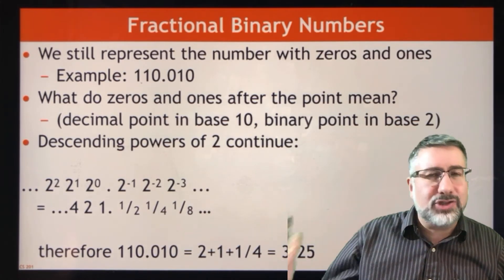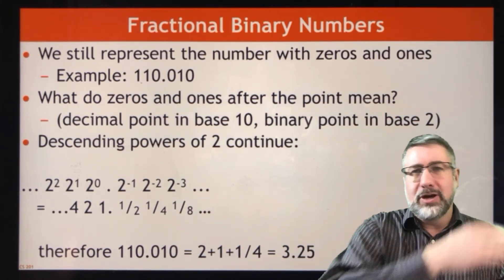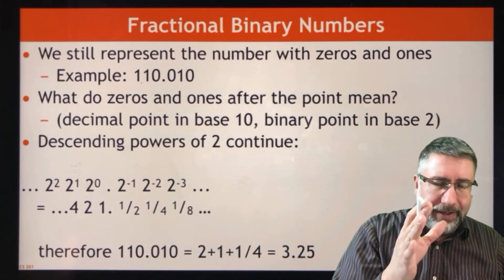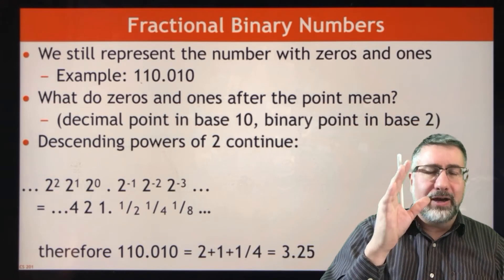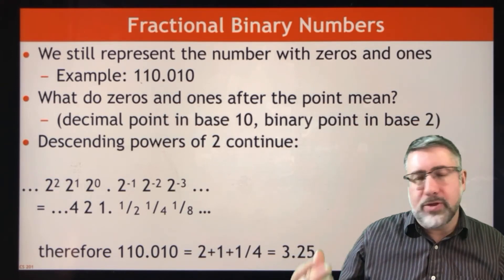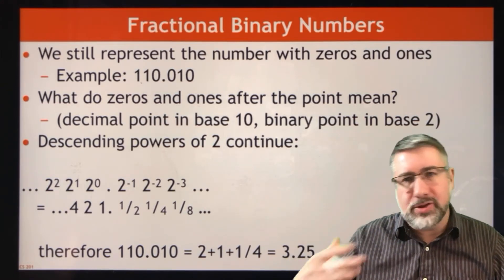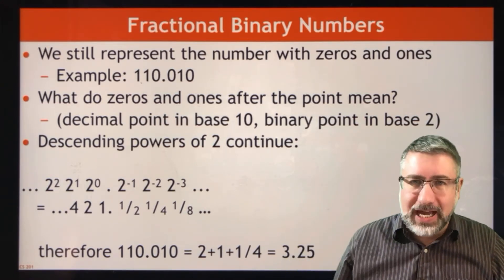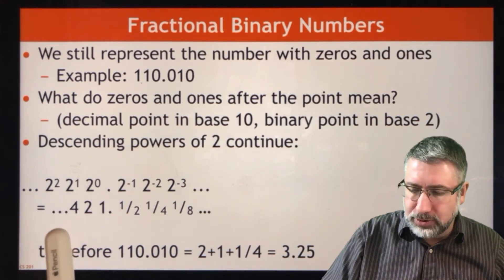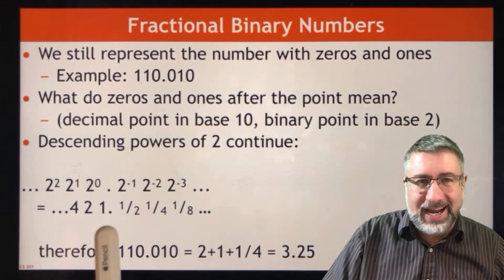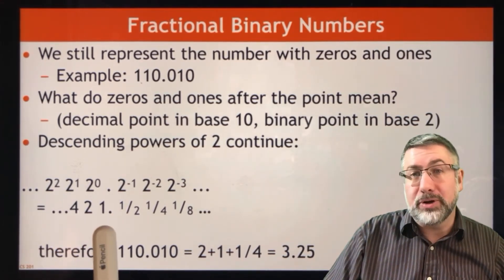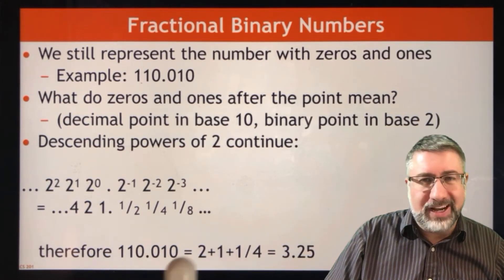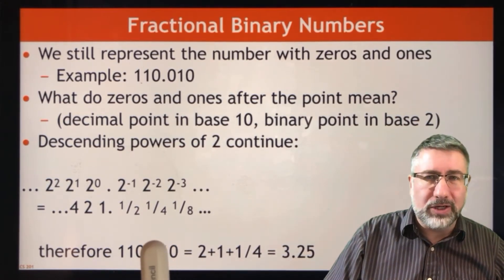And again this is just like base 10 — you have 100, 10, 1, and then you have 1 tenth, 1 one-hundredth, 1 one-thousandth, etc. The same is going to happen in binary. You have 4, 2, and 1, and then a half or 0.5, then a quarter or 0.25, and an eighth or 0.125.